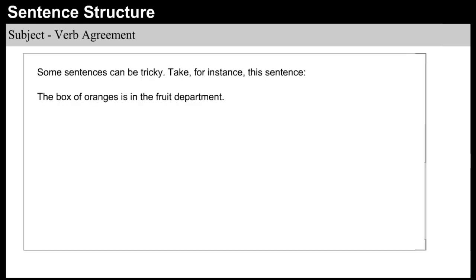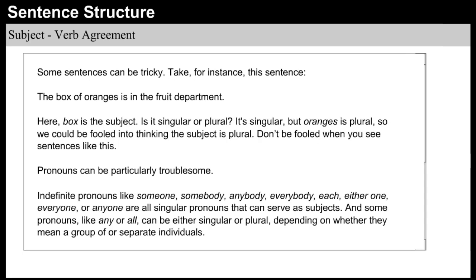Some sentences can be tricky. Consider: 'The box of oranges is in the fruit department.' Here, box is the subject — it's singular — but oranges is plural, so we could be fooled into thinking the subject is plural. Don't be fooled by sentences like this. Pronouns can be particularly troublesome. Indefinite pronouns like someone, somebody, anybody, everybody, each, either one, everyone, or anyone are all singular pronouns that can serve as subjects. And some pronouns like any or all can be either singular or plural, depending on whether they mean a group of or separate individuals.